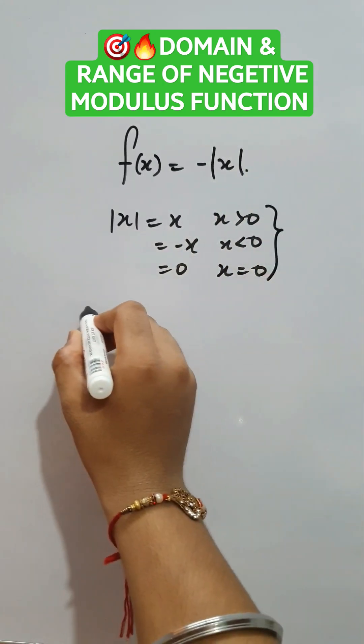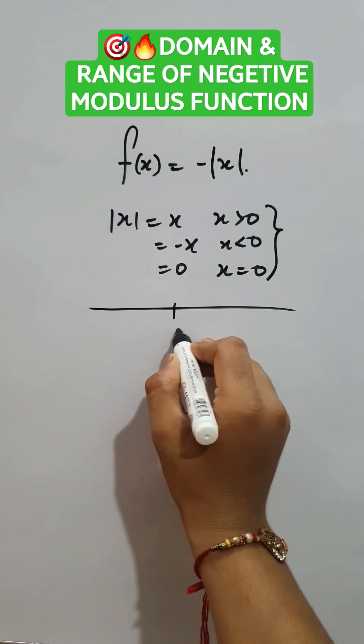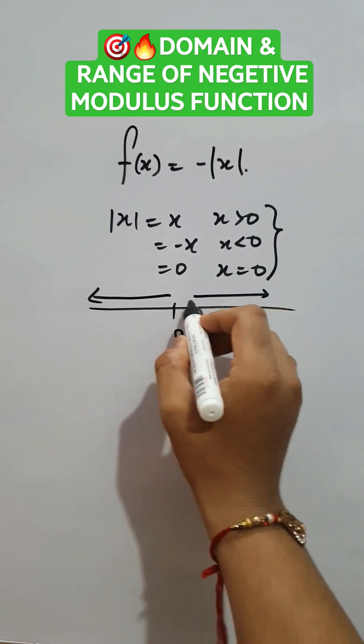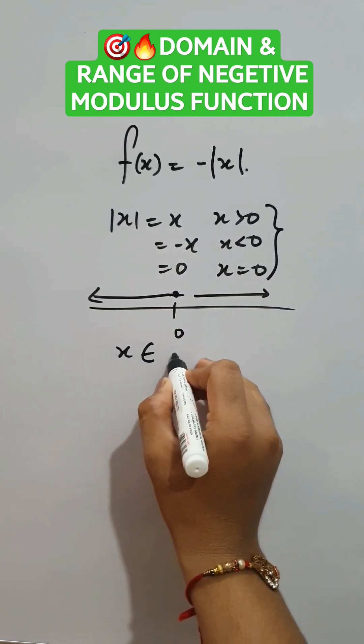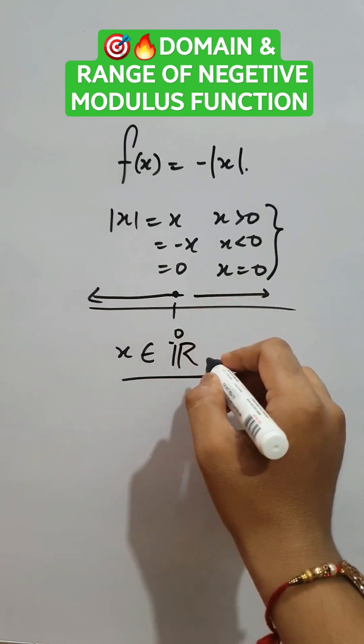These three values completely covers the left, right and the equal value of 0. So x belongs to real number set. So this is the domain of the given function.